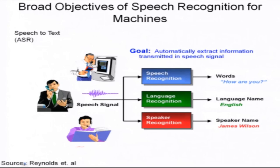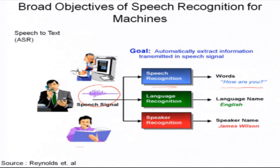Looking at this figure broadly, you can classify speech recognition into three parts. Given the input speech signal, you have an incoming speech signal which is input to a module called speech recognition. For example, if I say 'how are you,' the objective of this module is to output the words 'how are you.' There are also allied applications like language recognition, where the system identifies which language the speaker was using, or speaker recognition, where you identify who was speaking from a set of speakers.